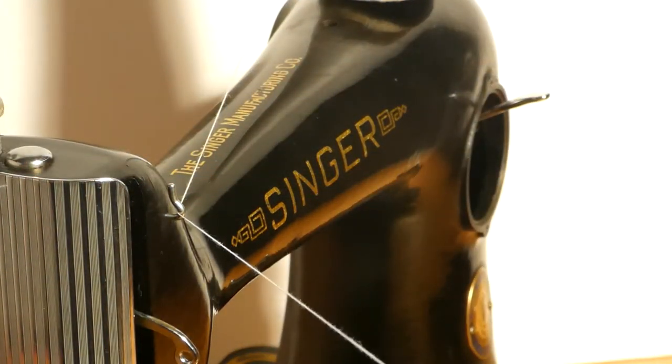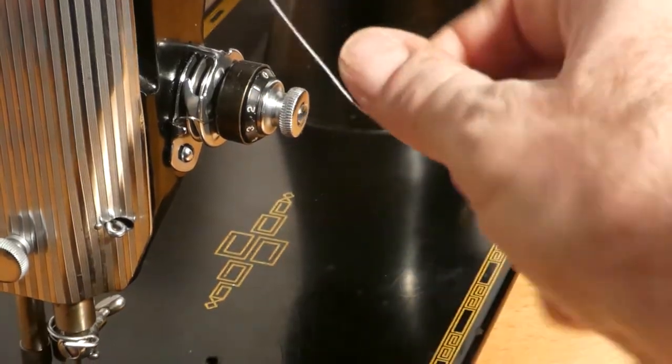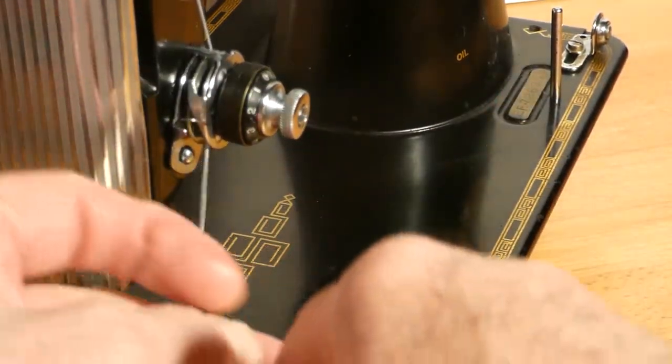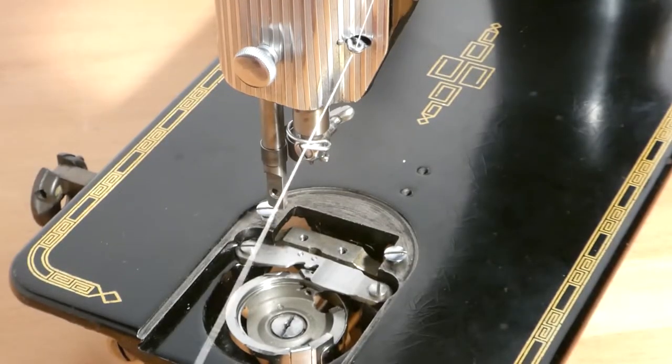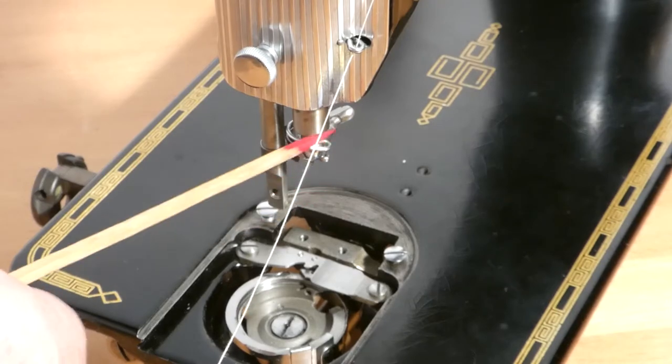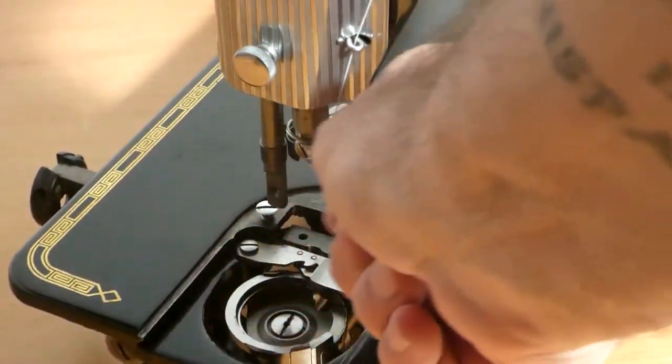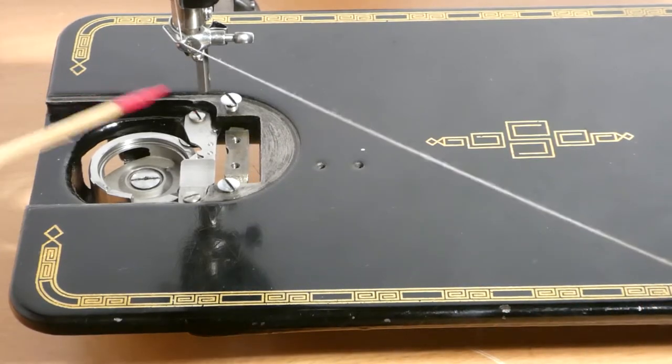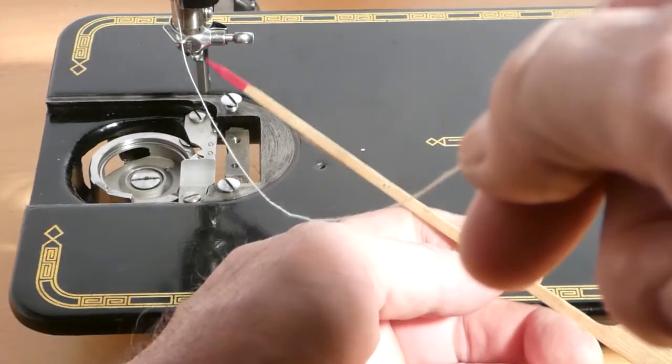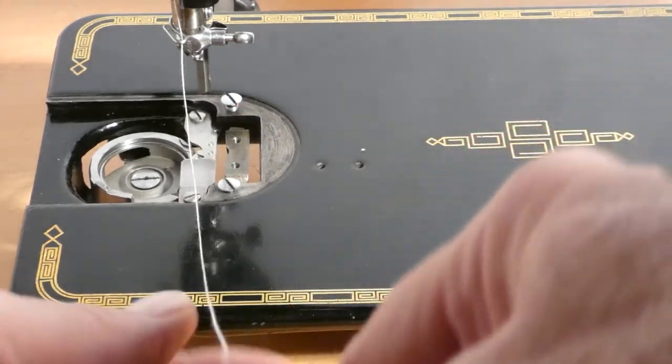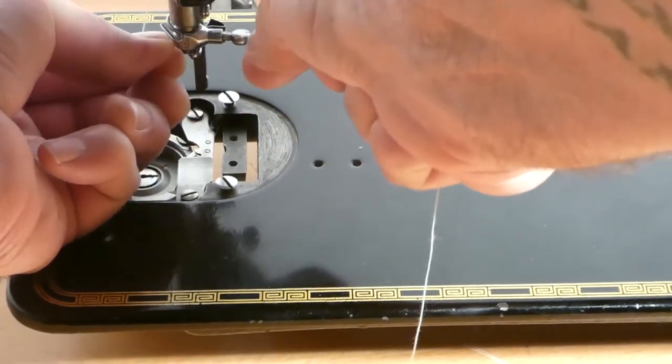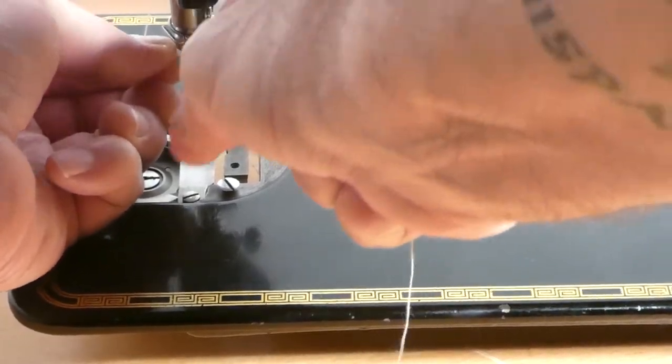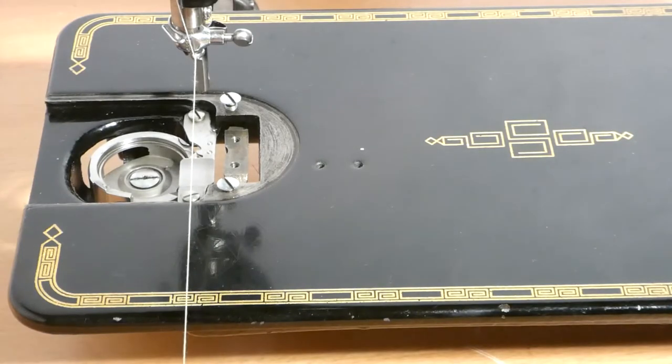There's another view. That goes right in there, then we run it down between the disks and up. Then we're going to loop it in here like this. Then we're going to bring the thread down and it has to go back here behind this little hook there. There.